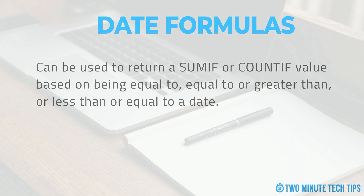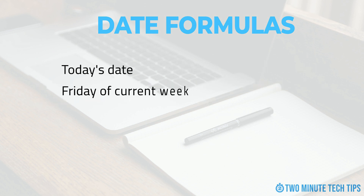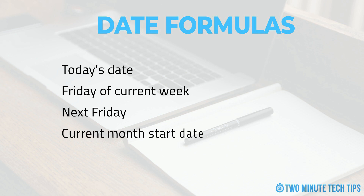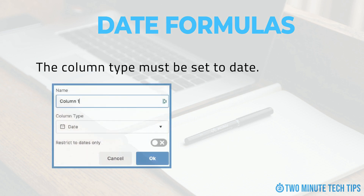We will show how to return the following: today's date, the date for Friday of the current week, the date of next Friday, current month start date, and next month start date. Please note, the column type must be set to date for these date formulas to return a date value. This can be done by double-clicking on the column header and changing the column type to date.